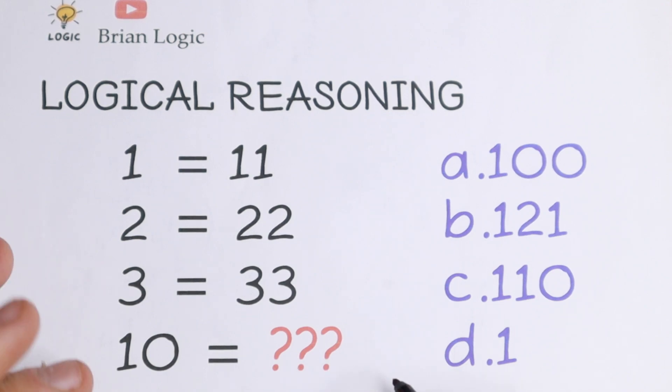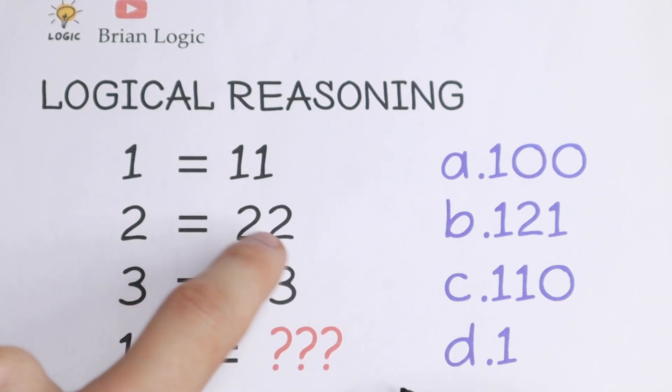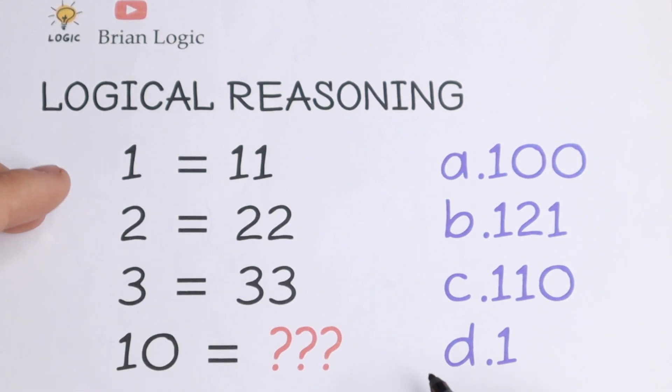At first this problem seems easy because we have a pattern - this number is doubled here, this is doubled here. But what about 10? If you double 10 we get 10 and 10, which is not our case. So let's find another pattern between all of these numbers.